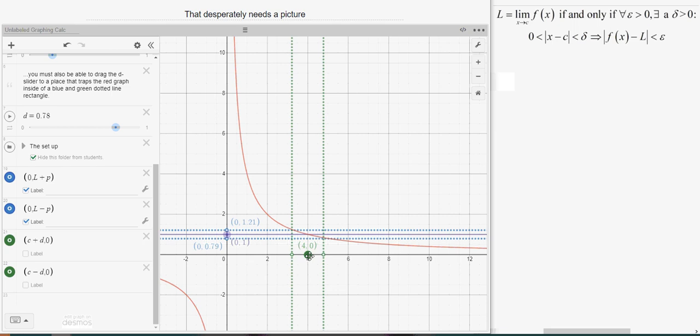If I pick my delta value correctly and make sure that that all fits in there, then I have a delta value here set of about 0.7, and it says if I pick numbers that are between 3.3 and 4.7 as inputs and put them into this function, I will get outputs that are between 0.79 and 1.21.